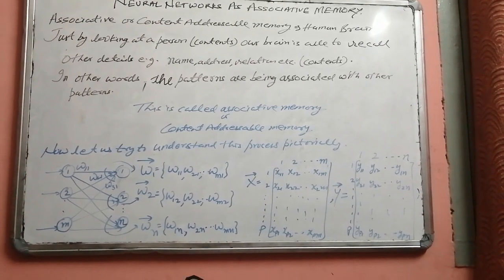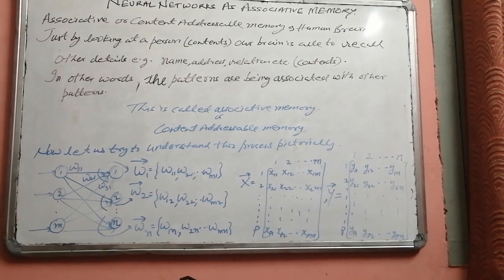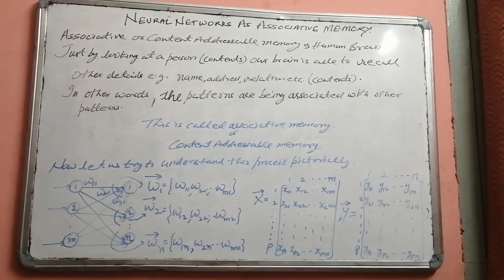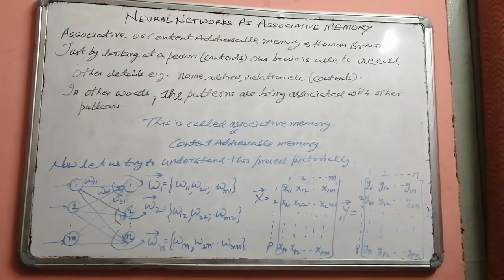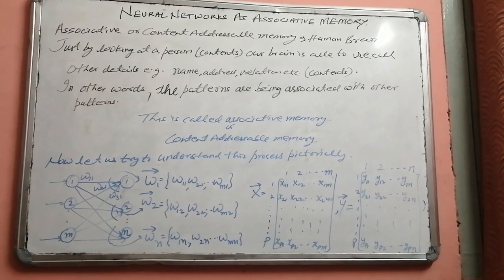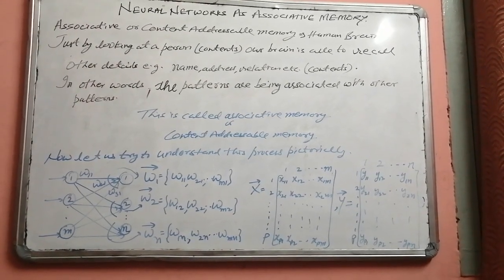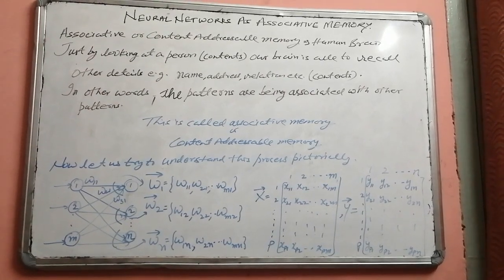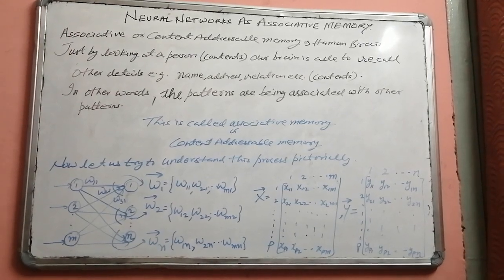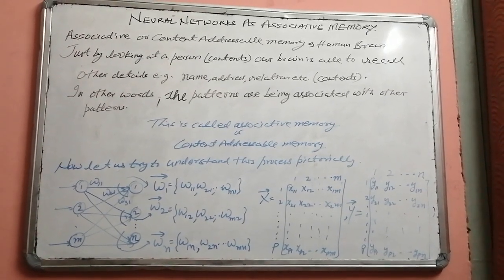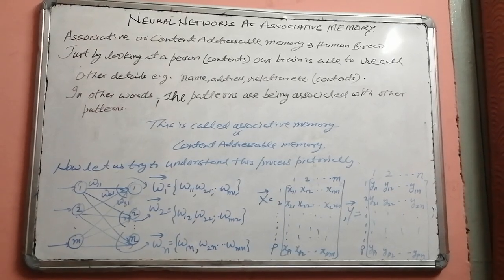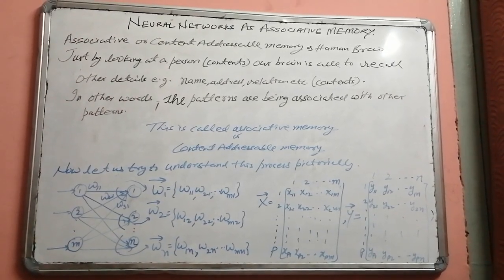If we see a particular person coming in front of us, then just by looking at him or her, we are able to recall their name, address, special characteristics, and many more details. This happens because in our mind there is a learned association between their look and their characteristics. This is called association-based learning or associative memory.